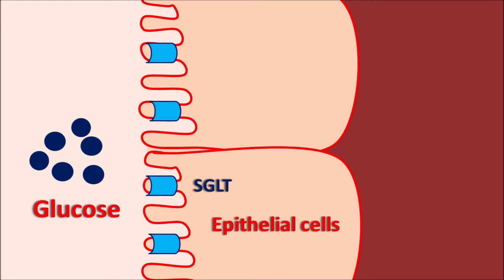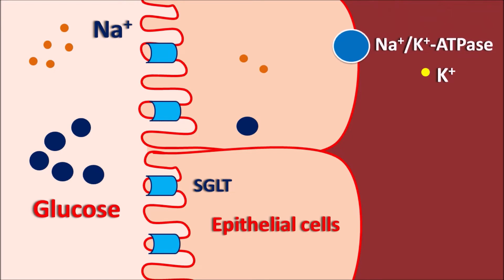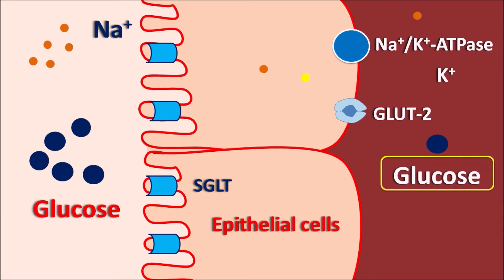At the apical membrane, SGLT sodium-glucose transporters are present. These require sodium to transport glucose across the membrane. Two molecules of sodium and one molecule of glucose are transported through SGLT. Sodium is then exchanged back via the sodium-potassium ATPase pump at the basolateral membrane — potassium comes in and sodium goes out. For glucose to cross the basolateral membrane into systemic circulation, GLUT2 transporters are required. So absorption needs two transporters: SGLT at the apical membrane and GLUT2 at the basolateral membrane.